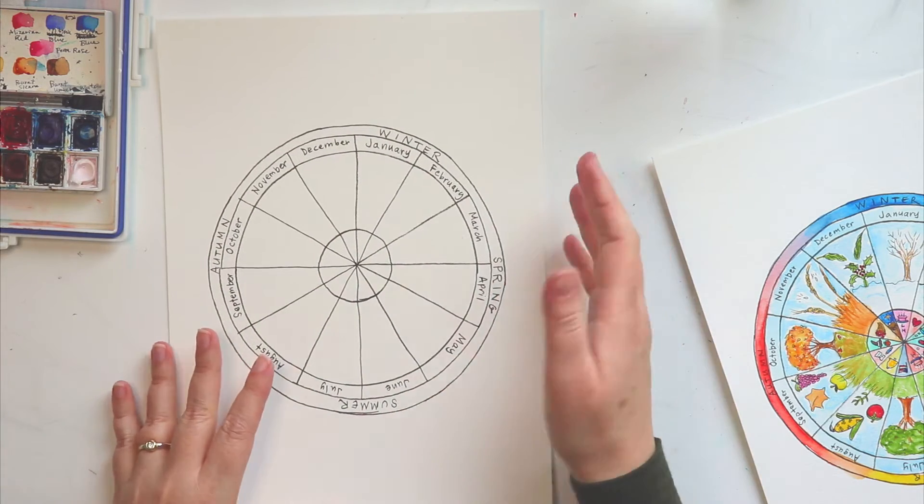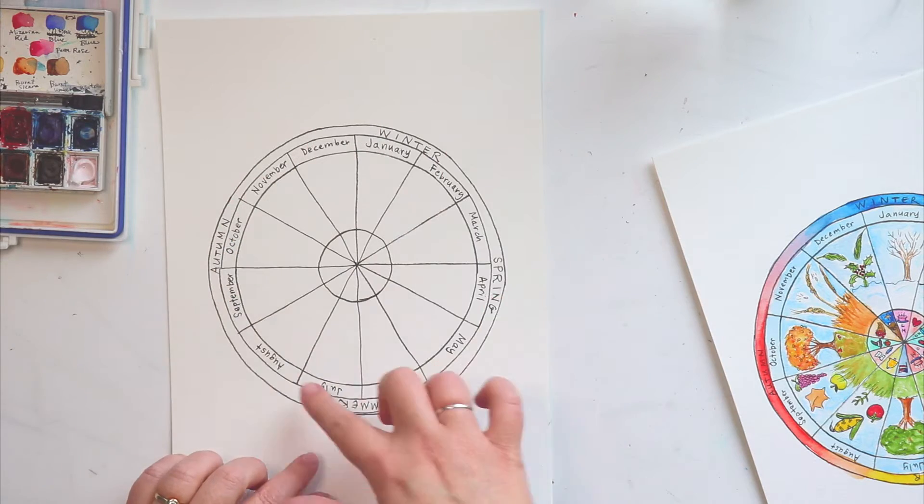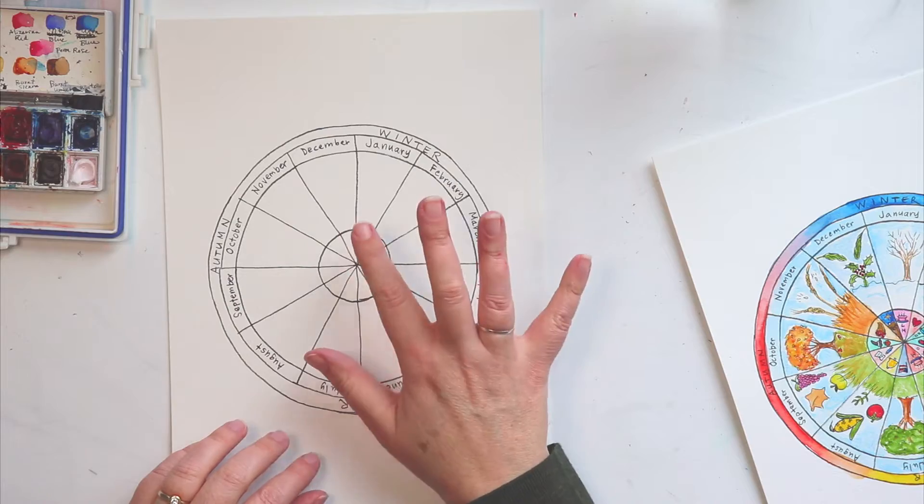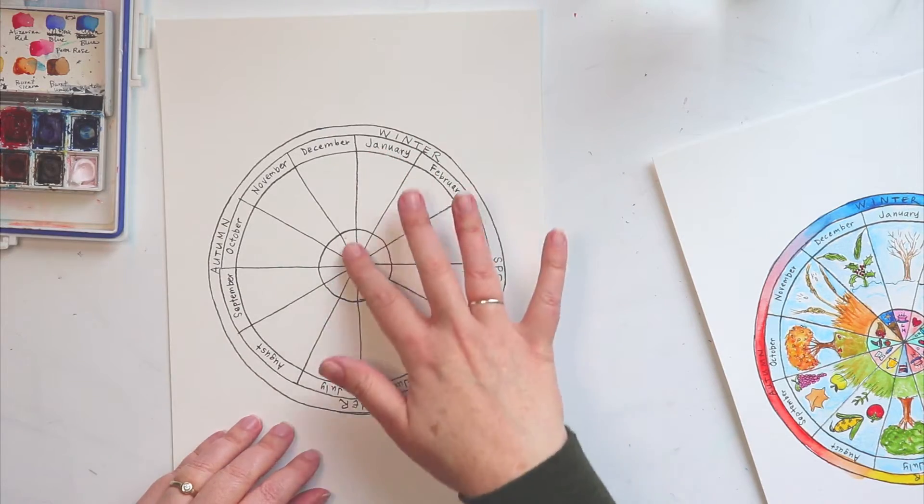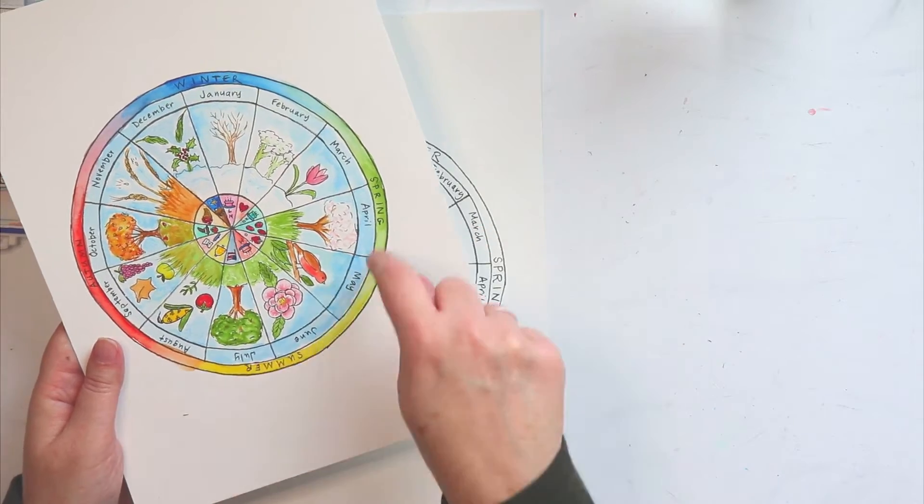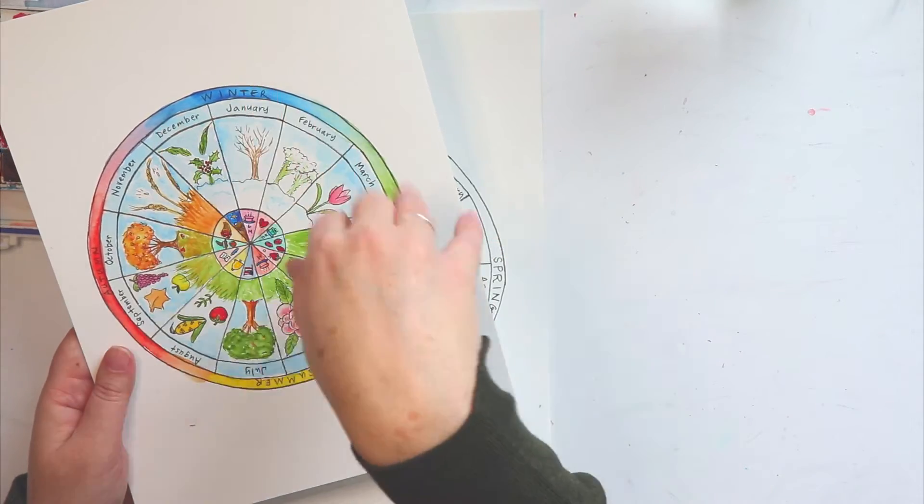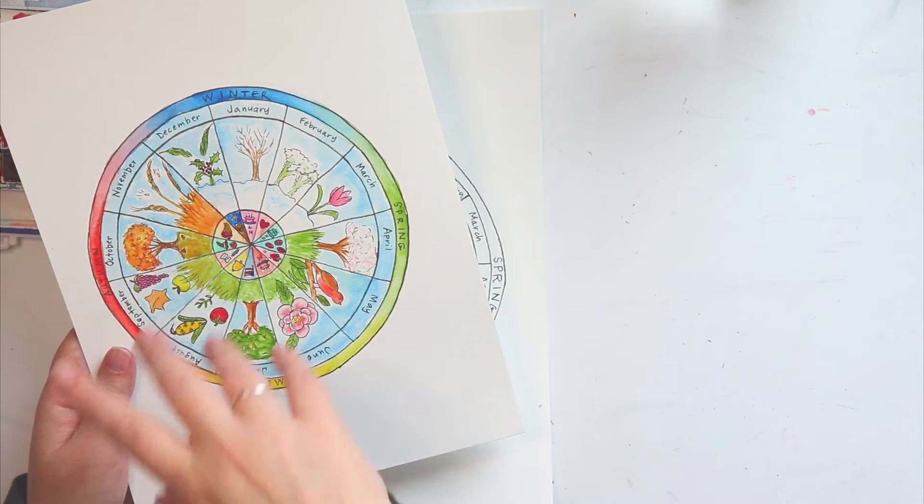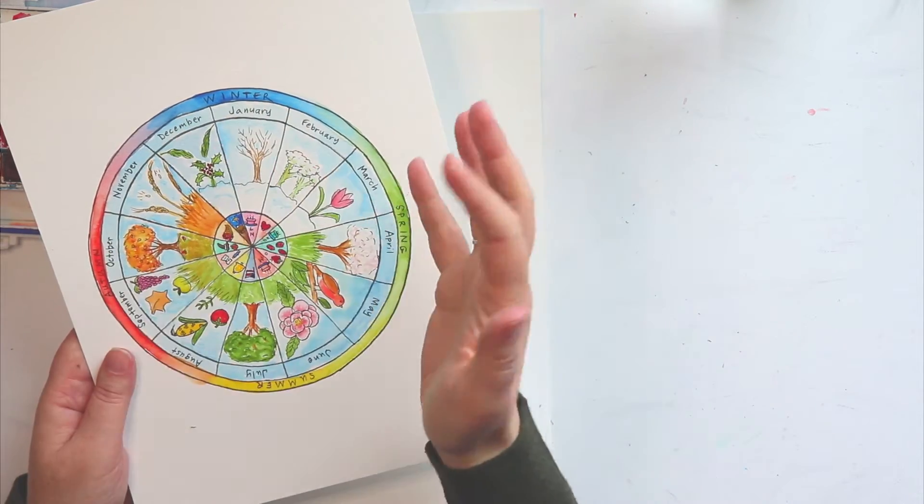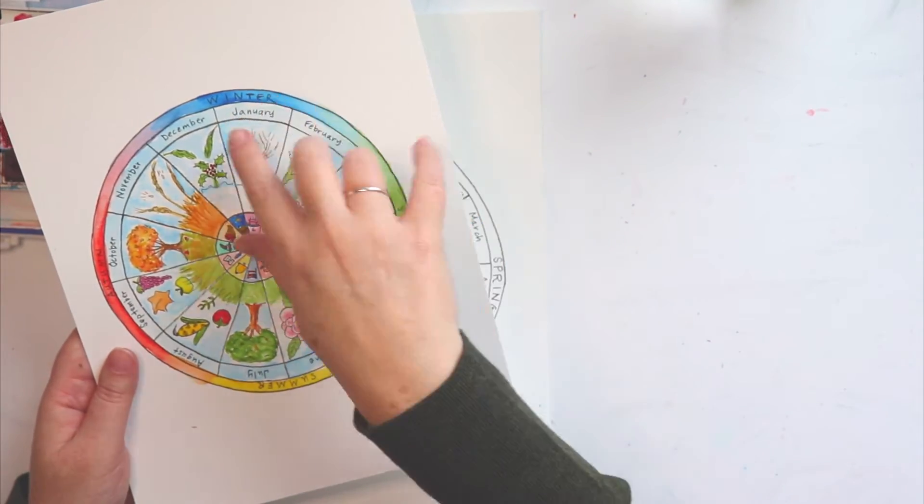And now is the fun part. This is the part that we're going to do the outside here with some color. So I like to do kind of a rainbow of colors here on the outside to kind of show what colors I see during those certain seasons. And so winter to me, I think of blue, I think of the blue on the snow and the blue skies. So kind of a bluish color.